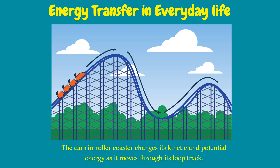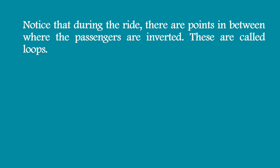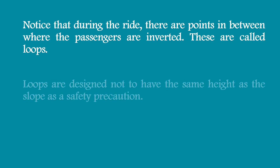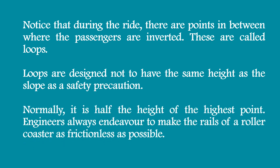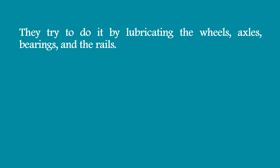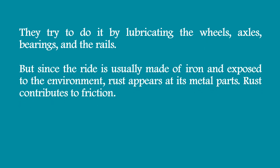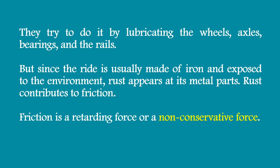The cars in a roller coaster change their kinetic and potential energy as they move through the loop track. During the ride, there are points where passengers are inverted, called loops. Loops are designed to be about half the height of the highest point as a safety precaution. Engineers try to make the rails as frictionless as possible by lubricating the wheels, axles, bearings, and rails. However, since the ride is usually made of iron and exposed to the environment, rust appears on its metal parts, contributing to friction — a retarding or non-conservative force.